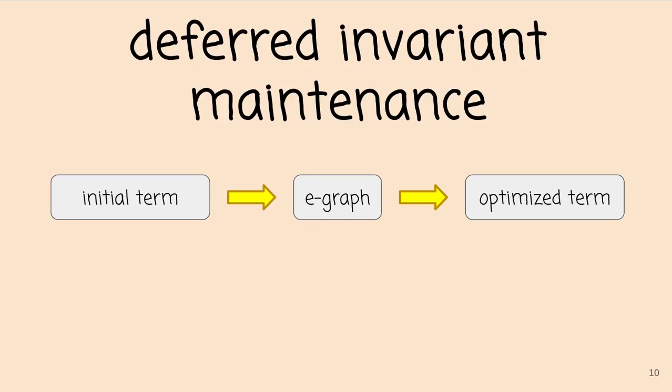And so that's where deferred invariant maintenance comes in. We've restructured equality saturation so instead of doing things one at a time, you instead find all patterns simultaneously.